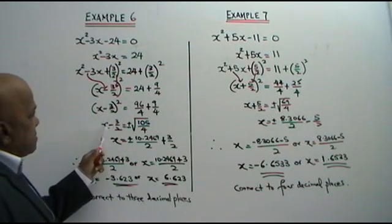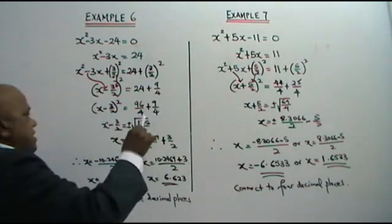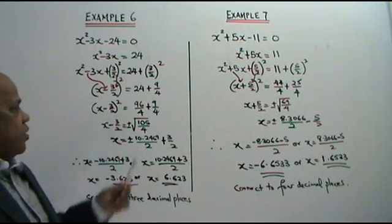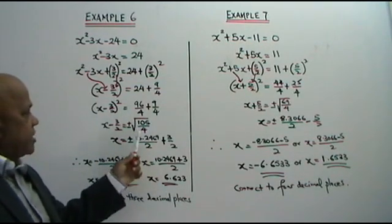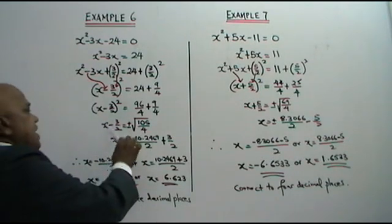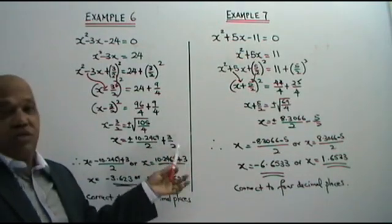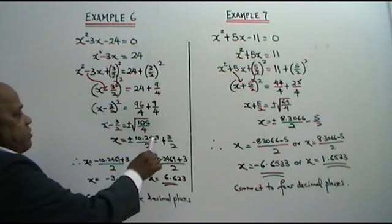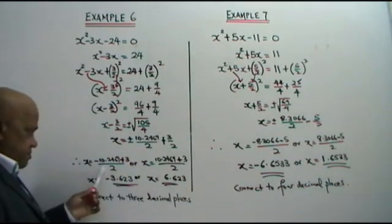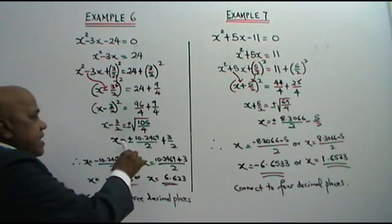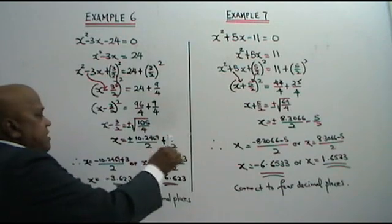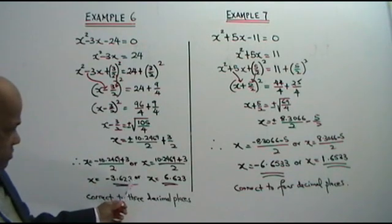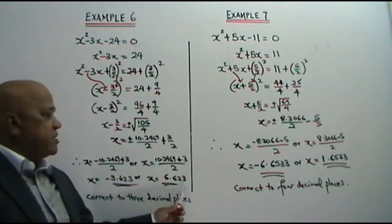So x minus 3 over 2 equals to plus or minus square root of 105 over 4, that is 10.2469 over 2 — square root of 4 is 2. Bring negative 3 over 2 to the other side, you get plus 3 over 2. Therefore, x has got two values: x equals negative 10.2469 plus 3 over 2, or x equals 10.2469 plus 3 over 2. So from here, x equals negative 3.623, or x equals 6.623, correct to three decimal places.